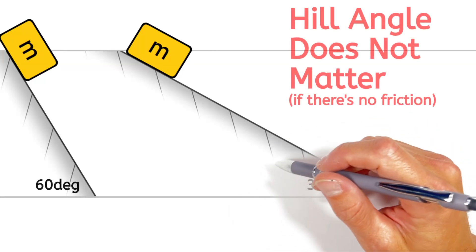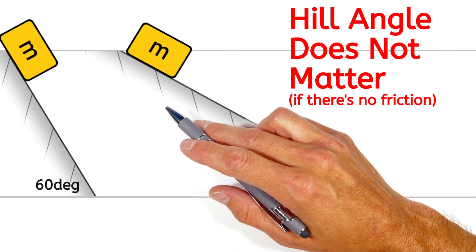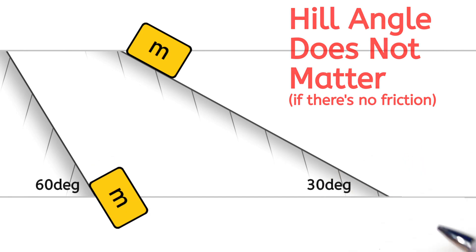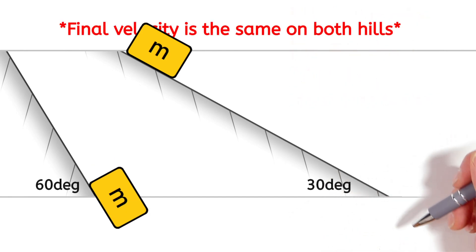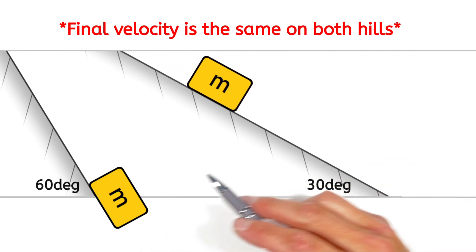Alright, today I'm going to prove to you that if we let an object like a block go from the top of a hill and slide down, in the absence of friction, when the block reaches the bottom of the hill, it will be traveling the same speed regardless of the angle of the hill.